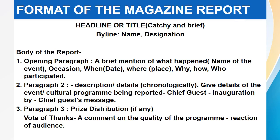Now comes the body of the report. Since report writing is now for 5 marks, the word limit is also less — 120 to 150 words — so we divide the report into 3 paragraphs. Paragraph number 1 is the opening paragraph. Here you write: a brief mention of what happened, that is the name of the event; on what occasion it took place; when it took place, that is the date; where it was held; and who all participated. All these WH-question answers come in paragraph number 1.